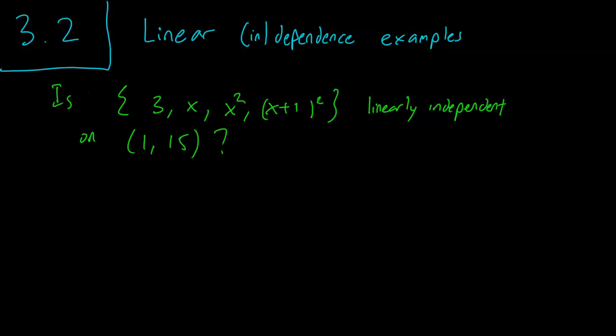So it's interesting here because you can see that 3 and x are clearly linearly independent. x and x squared are linearly independent — x squared isn't a constant multiple of x.